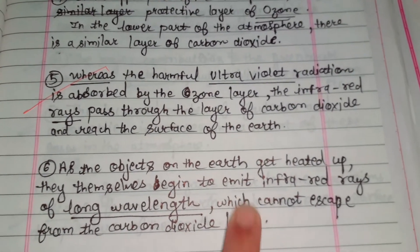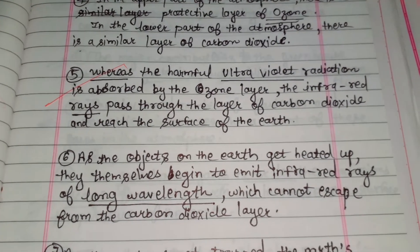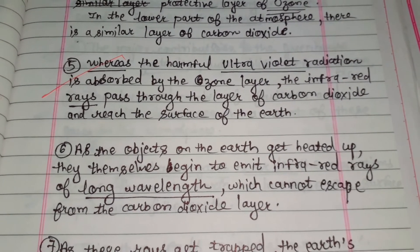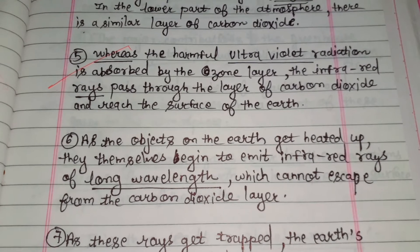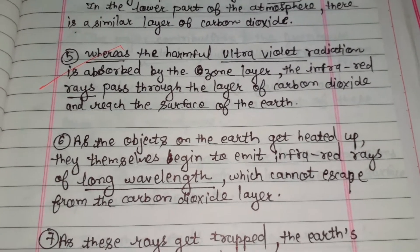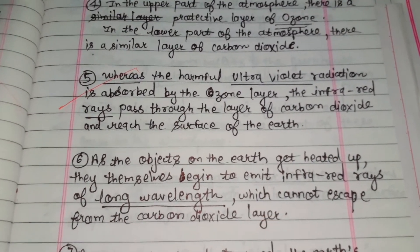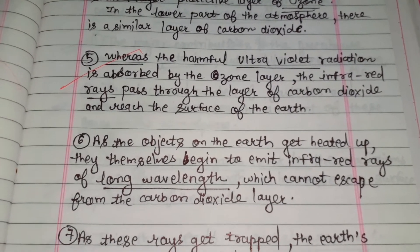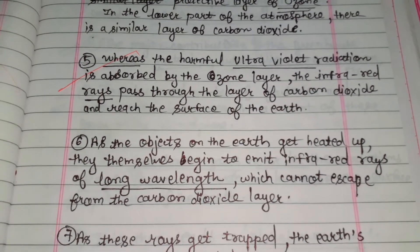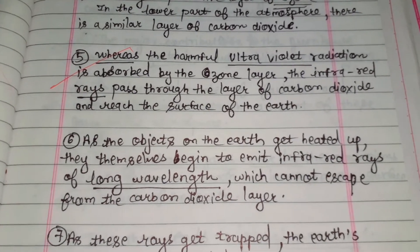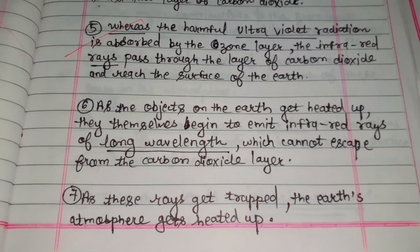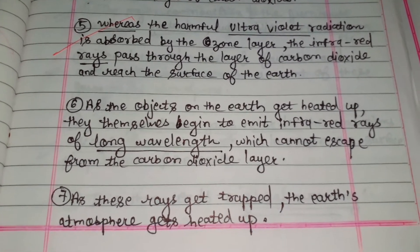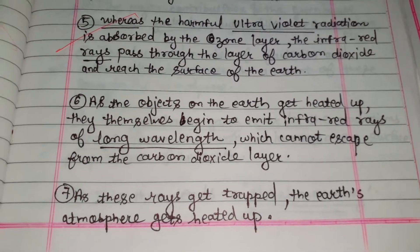As the objects on the earth get heated up, they themselves begin to emit infrared rays of a long wavelength which cannot escape from the carbon dioxide layer. The objects present on the earth also emit infrared rays of long wavelength, and that's why they cannot escape from the carbon dioxide layer. As these rays get trapped, the earth's atmosphere gets heated up.